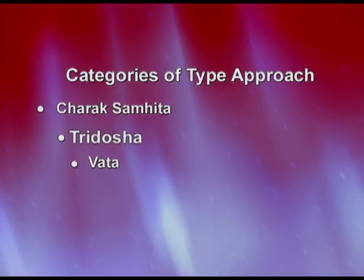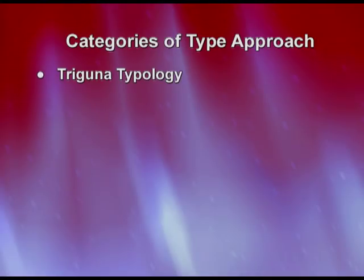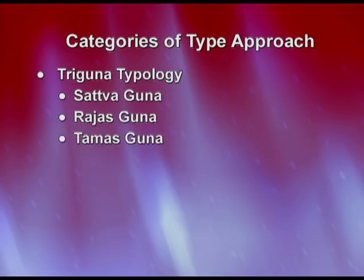The three doshas — Vat, Pit, and Kaf — form your temperament or Prakriti, the way you are based on body constitution. Then we have the three gunas: the Sattvic guna, the Rajasic guna, and the Tamasic guna.